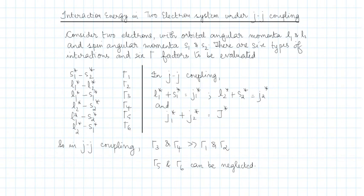An important point to remember is that in JJ coupling, l1 and s1 interact to give j1, and l2 and s2 interact to give j2, and these individual total angular momenta give the resultant angular momentum of the system.